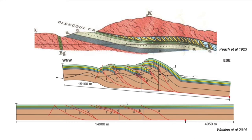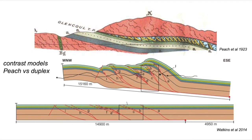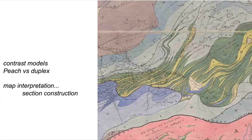So how do we build cross sections through these sorts of regions? In dealing with complex structures, it's common to use theory and ideas developed elsewhere. We're going to contrast two ways of building geological knowledge: one using the ideas of Ben Peach, represented in that top cross section, and another approach using the so-called duplex model, and we're going to do this using geological maps.